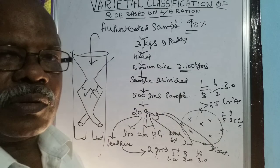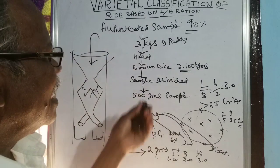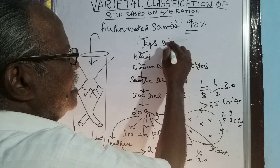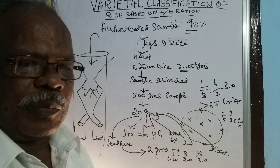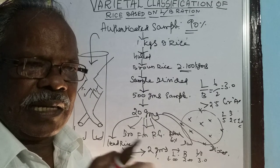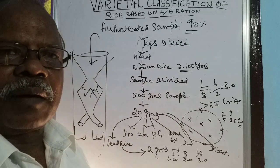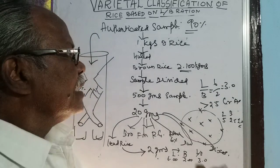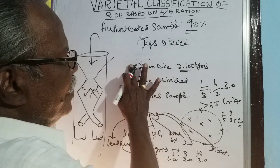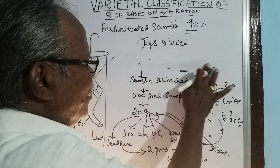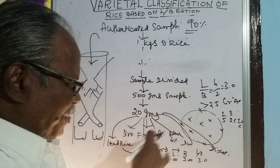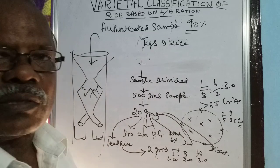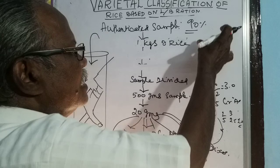This is how the Government of India classifies the variety, and FCI has adapted the same. During FCI procurement, 1 kg of rice sample is taken. If the variety is suspected, the 1 kg sample is divided using a sample divider to 500 grams, then 20 grams are taken for gram-metric analysis, fractions are weighed, and 2 grams of head rice is taken to find out the LB ratio.